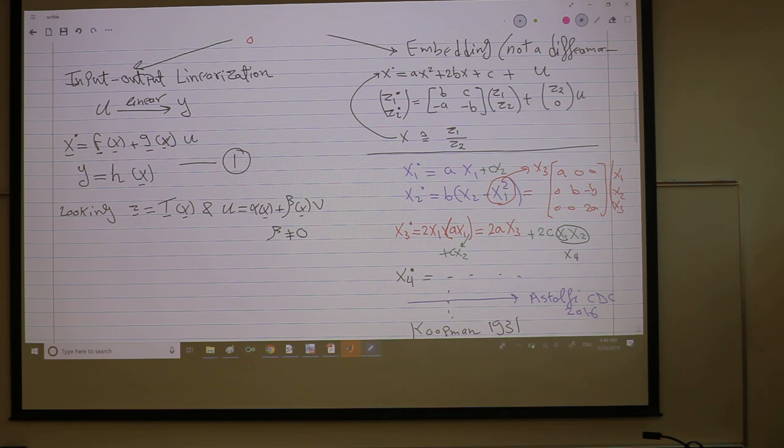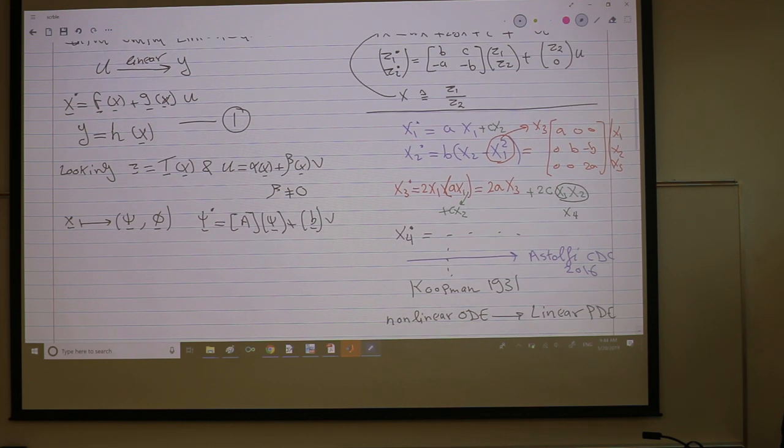So transformation and feedback such that the system one, or the states x, will go to two states - two sets of states, like psi's and phi's for example. And the dynamics of psi is completely linear. The dynamics of phi, this is the remaining dynamics that we could not linearize. This is something, whatever it is, but it's void of the input.